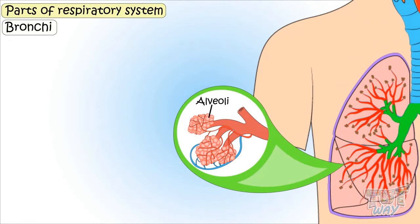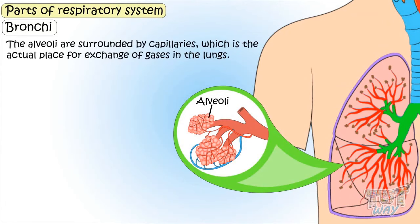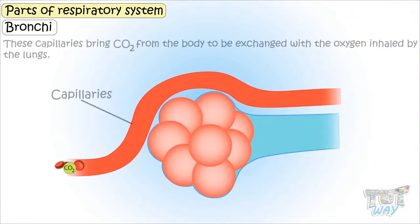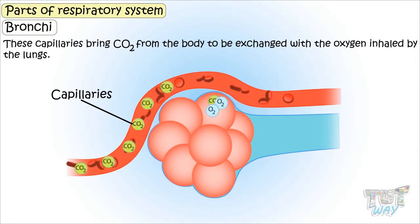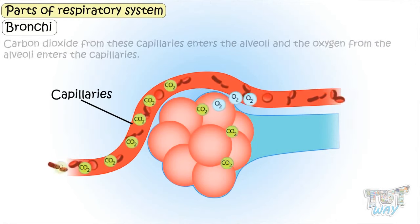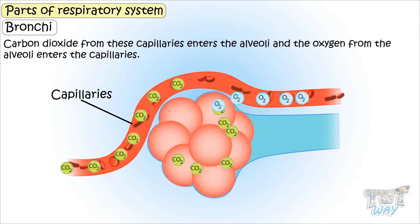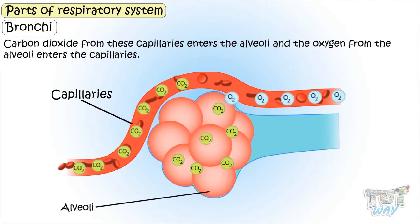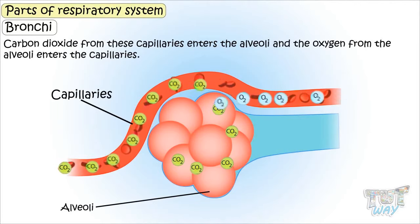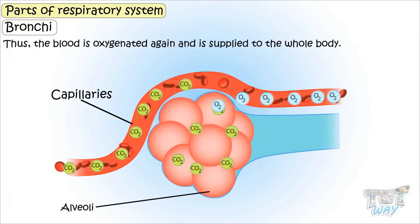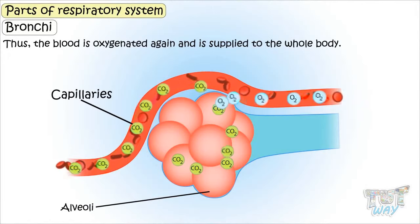The alveoli are surrounded by capillaries, and this is the actual place for the exchange of gases in the lungs. These capillaries bring carbon dioxide from the body to be exchanged with the oxygen inhaled in the lungs. Carbon dioxide from the capillaries enters the alveoli, and oxygen from the alveoli enters the capillaries. Thus, the blood is oxygenated again and is supplied to the whole body.